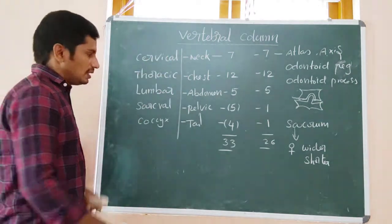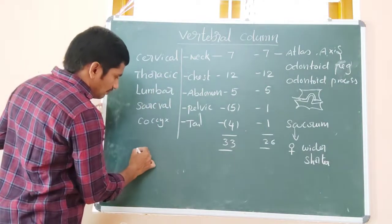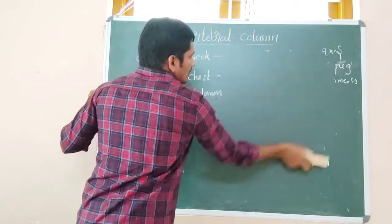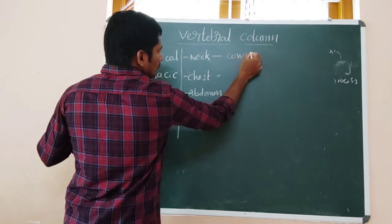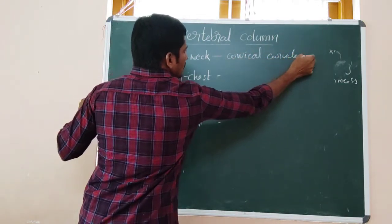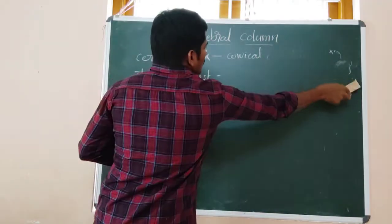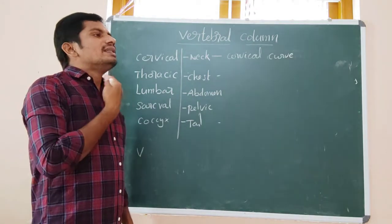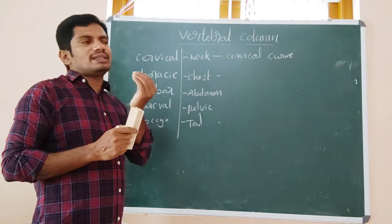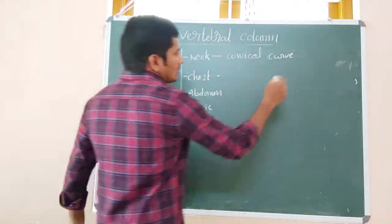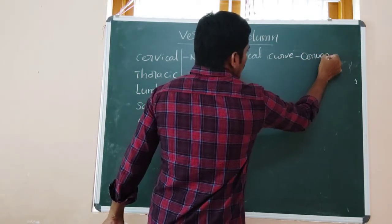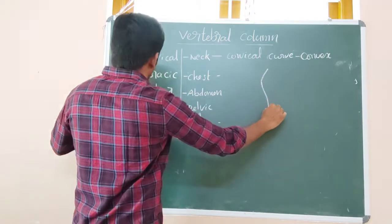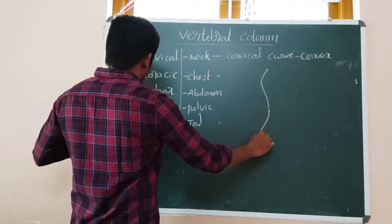The vertebral column has curvatures. When viewed from the side, there are four curvatures: the cervical curvature, thoracic curvature, lumbar curvature, and pelvic curvature. The cervical curvature is forward convex. The thoracic curvature is backward convex. The lumbar curvature is forward convex. The pelvic curvature is also backward convex.